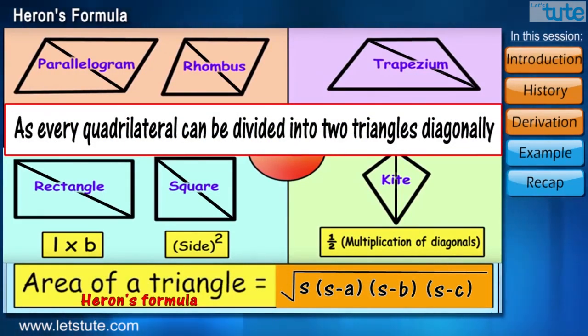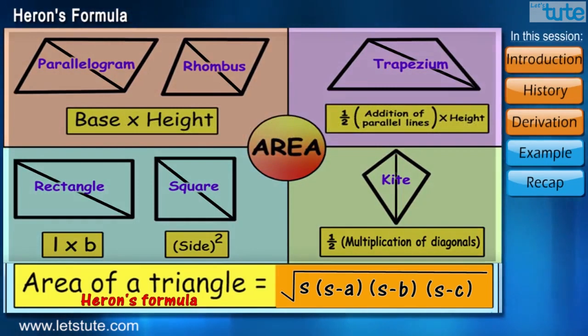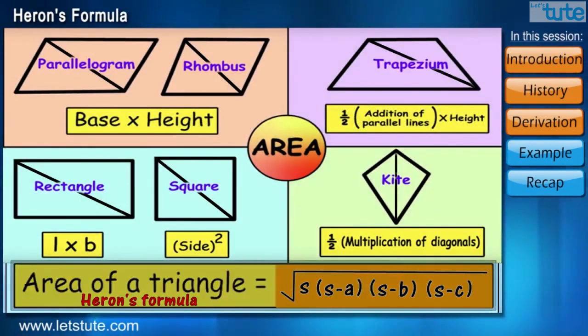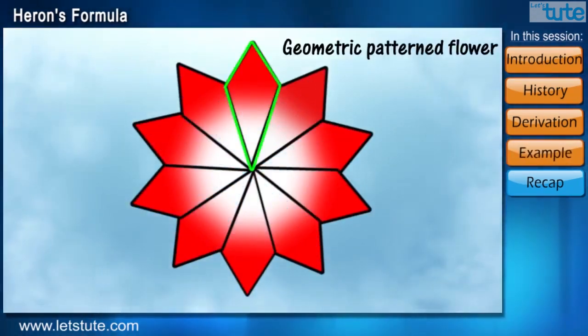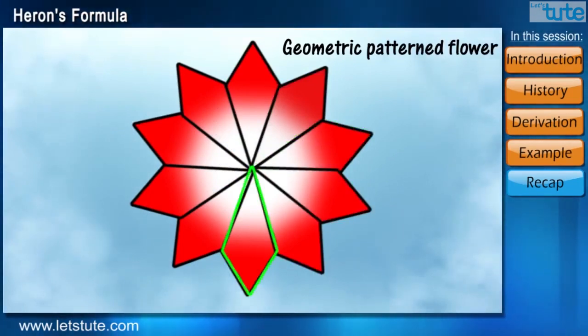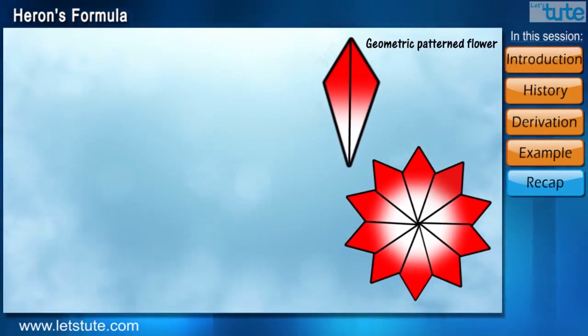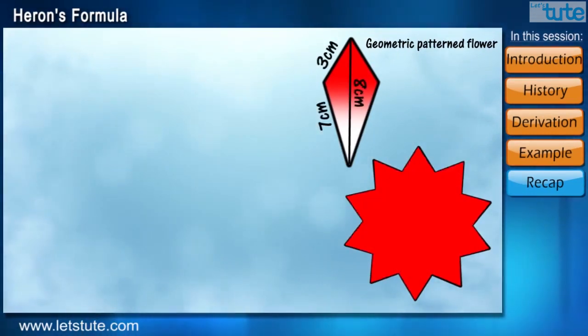Let's have a look at one interesting example of how we can calculate the area of quadrilateral using Heron's formula. Suppose there is a geometric patterned flower. Each of its petals is the same and is kite shaped with length of sides as mentioned. We have to calculate the area of the flower.